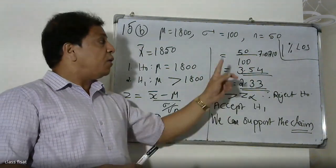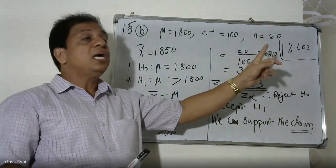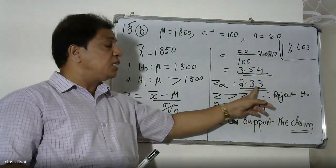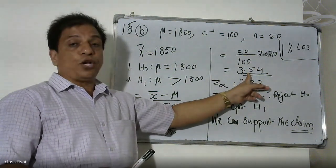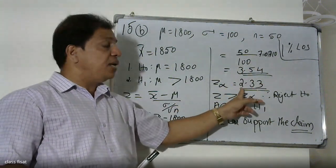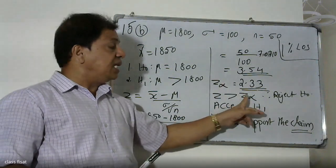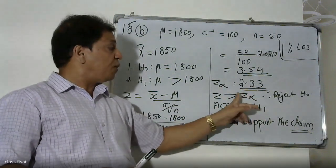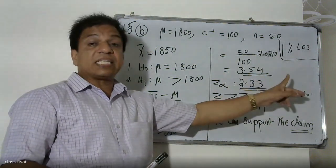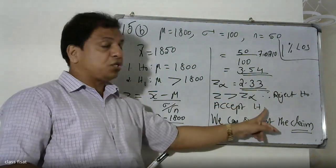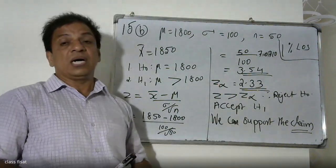To summarize: at the 1% level of significance, the table value is 2.33 and the calculated value is 3.54. Since the calculated value 3.54 is greater than the table value 2.33, we can support the claim.